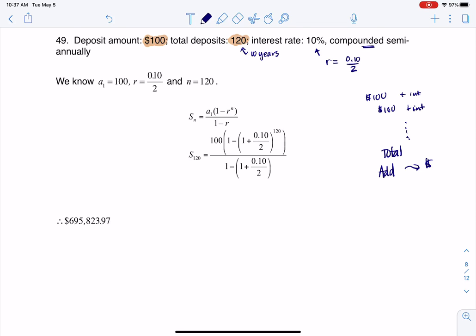This follows a geometric series. So we're going to run the geometric series knowing that the first amount we deposit is $100, the interest rate is 10% over twice a year, and we're going to do this 120 times.